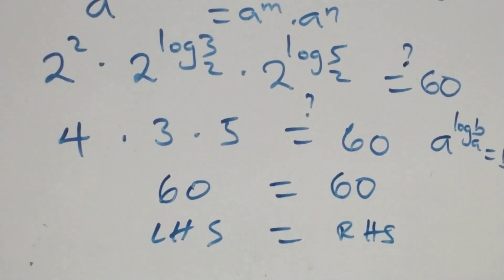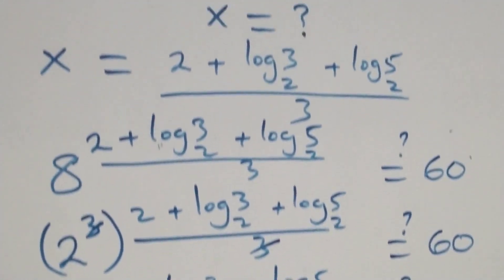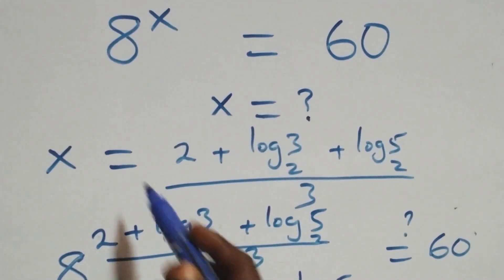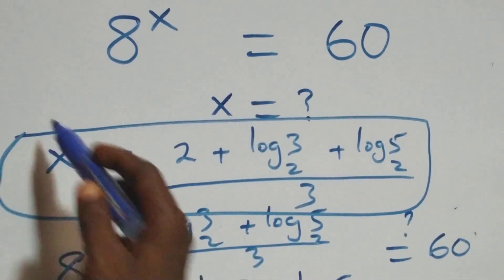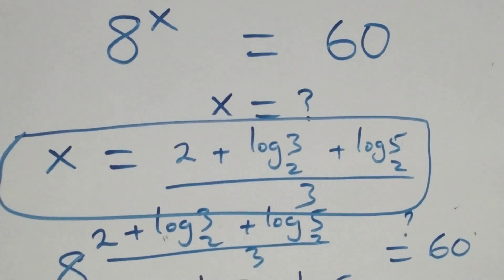And therefore we conclude that x equals to (2 plus log 3 base 2 plus log 5 base 2) over 3, which satisfies this given problem. Thank you for watching. Don't forget the steps. Subscribe for more videos and turn the notification bell on. Share this video, give it a thumbs up and put your comment. See you next time, bye for now.